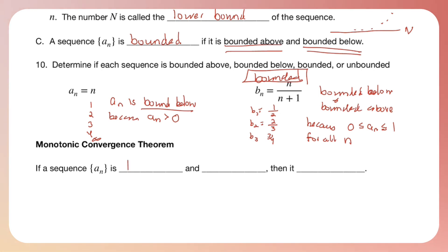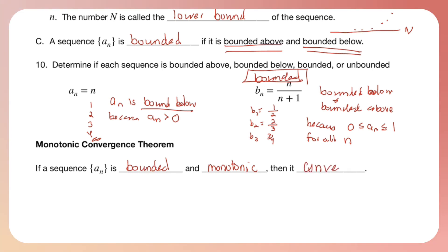The last thing we need to know is the monotonic convergence theorem. If a sequence a sub n is bounded and monotonic, then it automatically converges. So if you have a bounded monotonic sequence, it converges.